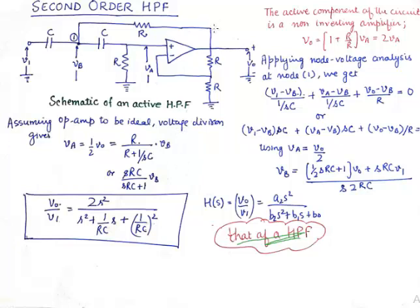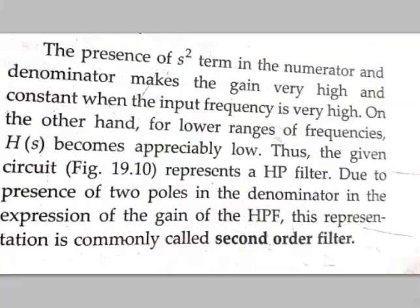What we can conclude is that the schematic of this high pass filter conforms to a transfer function that will behave like a high pass filter. And the rationale is the presence of S squared term in the numerator and the denominator makes the gain very high and constant when the input frequency is very high. On the other hand, for lower ranges of frequency, HS becomes appreciably low. Thus, the given circuit represents a high pass filter due to presence of the poles in the denominator and the expression of the gain of the high pass filter. This representation is commonly called second order filter.